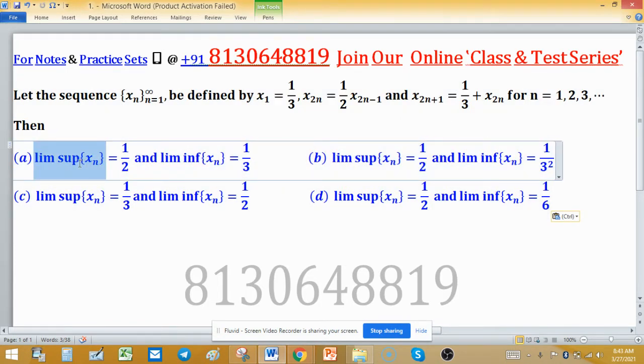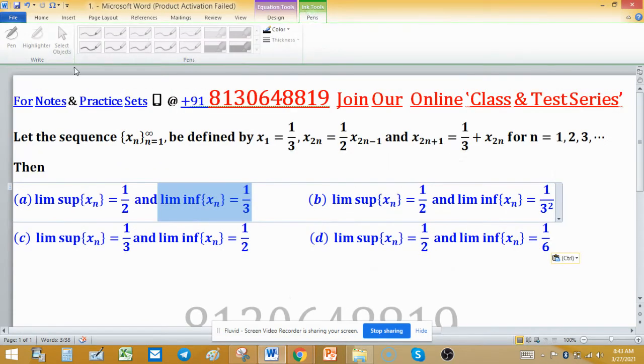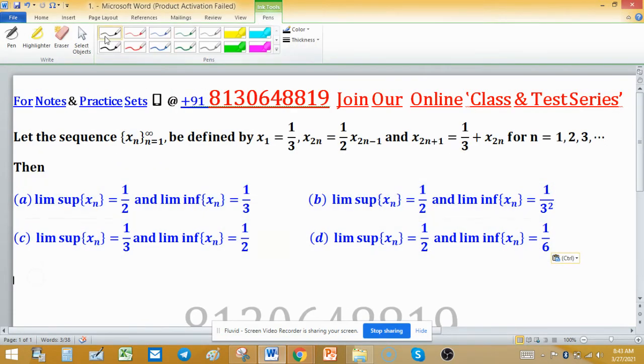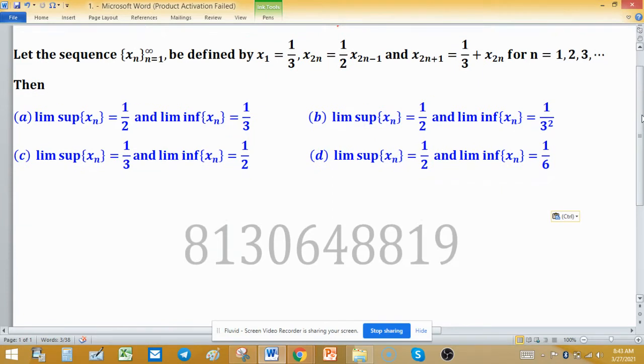Options are: limit superior of xn is half, limit inferior of xn is 1 by 3. Similarly, limit superior and inferior is asked in all four options. So, first we compute what is limit superior and what is limit inferior for this particular sequence.